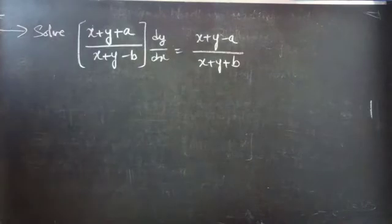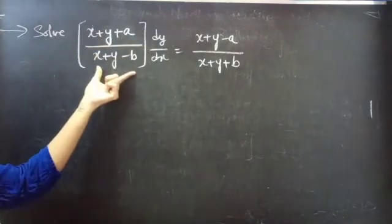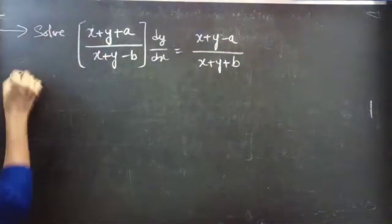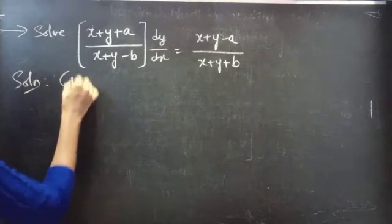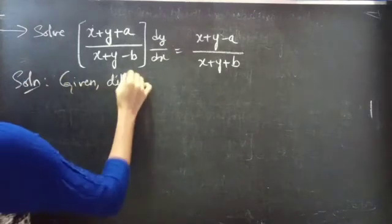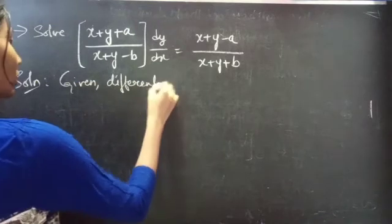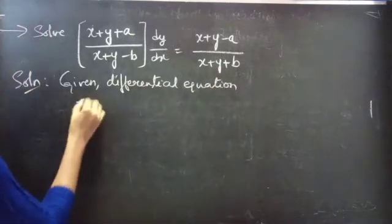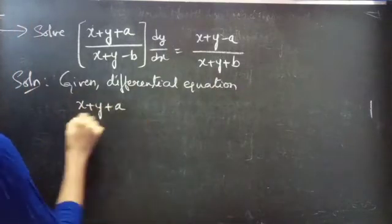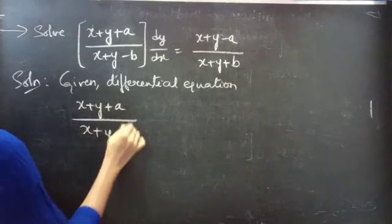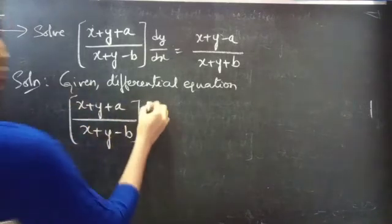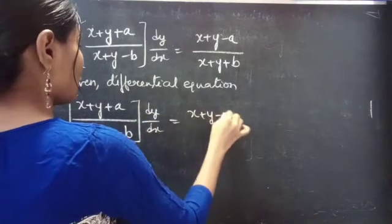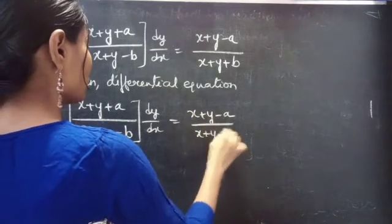Problem. Solve: (x + y + a) / (x + y - b) · dy/dx = (x + y - a) / (x + y + b).